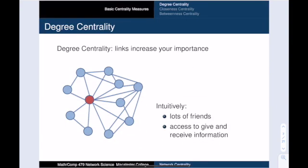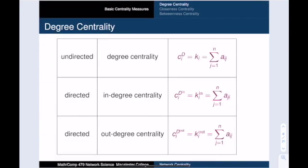A simple measure of network importance is having lots of links. If you have many links, then you have a lot of friends. And this makes you influential, because you have many opportunities to exchange information. This is the idea behind degree centrality. The more links you have, the more important you are.